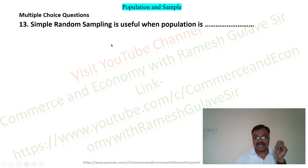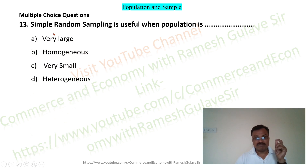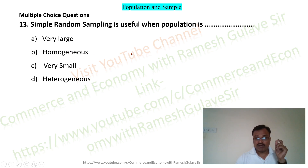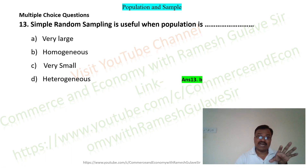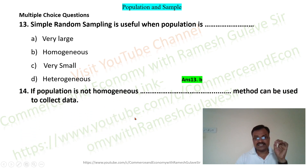The next question says: simple random sampling is useful when population is dash. The options are: very large, homogeneous, very small, and heterogeneous. Simple random sampling is useful when the population is homogeneous — meaning all elements are of the same kind. Option B is the right answer.